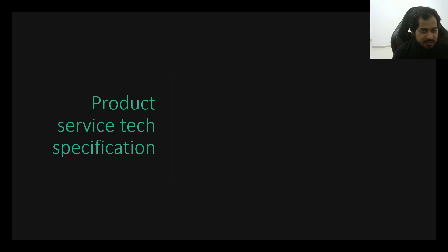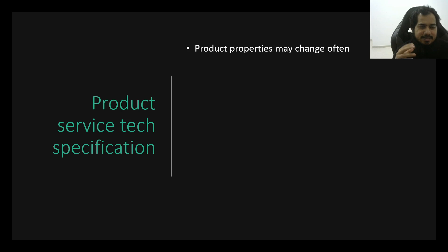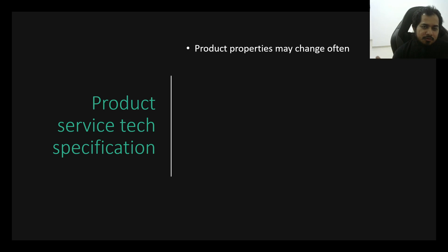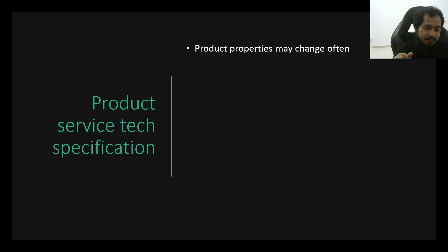Similarly, we have the product service specification. What is the product? What properties does it have, and how do those change over time? For example, when I started with the product, there was a unique serial that needed to be unique. A few days later, new requirements came in.